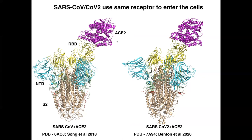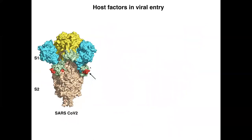Initially it was thought that maybe there is a small difference in the way the spike protein binds to the receptor, and that this could be one of the reasons why it is much more infectious. It is now clear that this may not entirely be the case. SARS-CoV-2 spike protein seems to have evolved to contain a new motif, colored here in red.